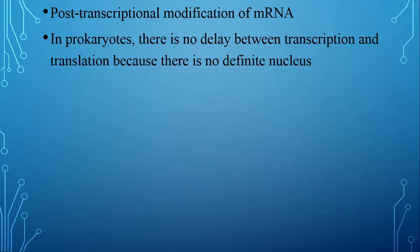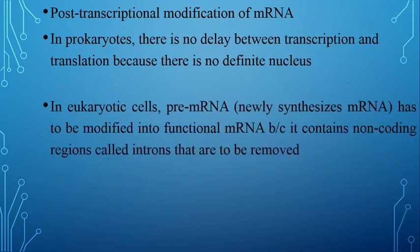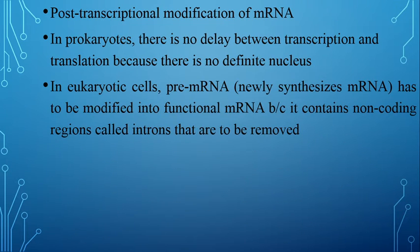In prokaryotic cells, there is no delay between transcription and translation because there is no definite nucleus. Prokaryotic cells are without a nucleus, so messenger RNA is transcribed from DNA and without any delay directly forms protein by the process of translation. But in eukaryotic cells, there is a nucleus, so the pre-messenger RNA or newly synthesized messenger RNA has to be modified into functional messenger RNA.